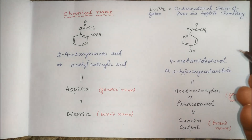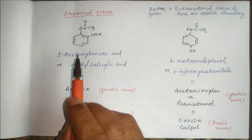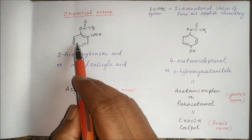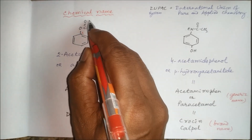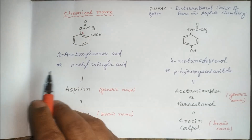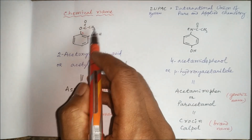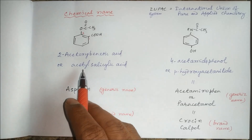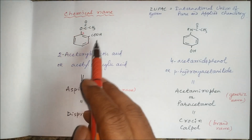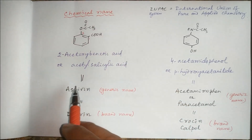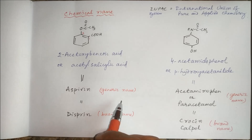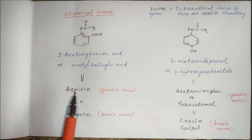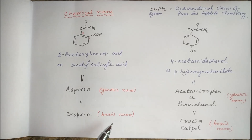Just see two examples. This is benzoic acid — at position one, there is an acetyl group, and this is acetoxybenzoic acid, or we can say acetylsalicylic acid. The chemical name is acetylsalicylic acid, and most commonly this molecule is known as aspirin. Aspirin is the generic name, and there are different brands of aspirin — for example, Dispirin, which is a brand name.